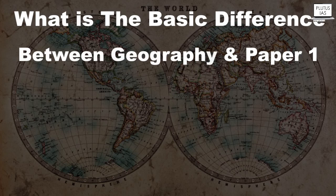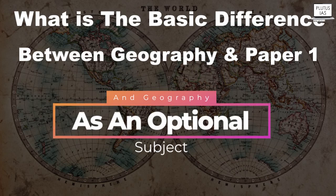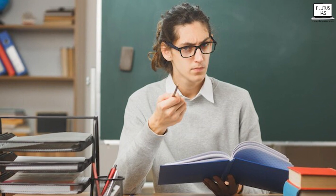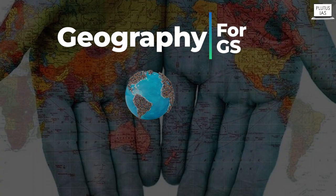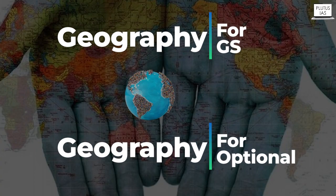What is the basic difference between geography in Paper 1 and geography as an optional subject? This is the most common question that students ask me. There is also a kind of misconception in students' minds — that geography for GS and geography for optional are either exactly the same or exactly two ends apart. But I feel that is not exactly the case.